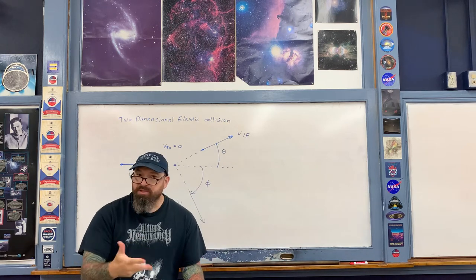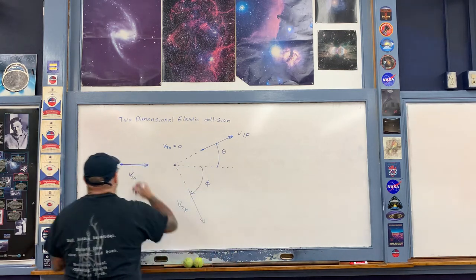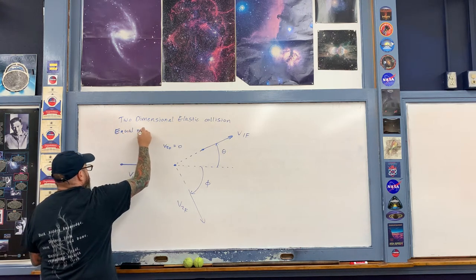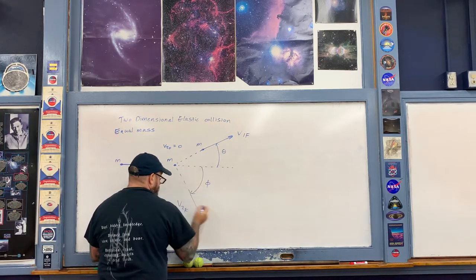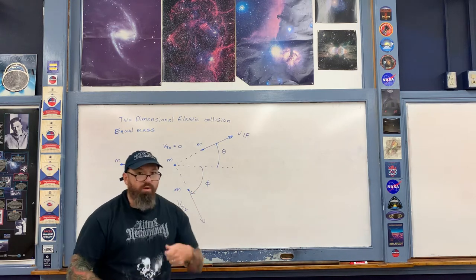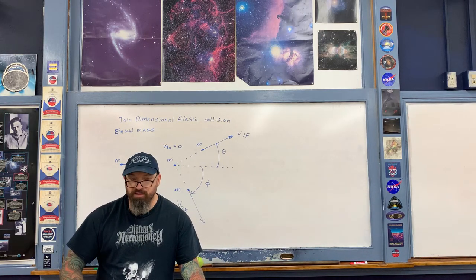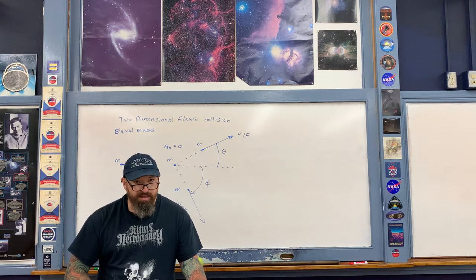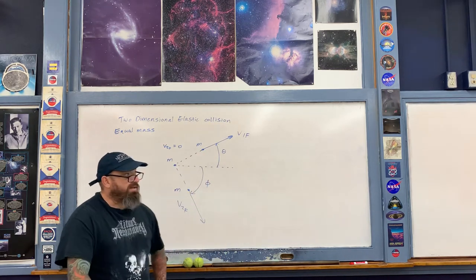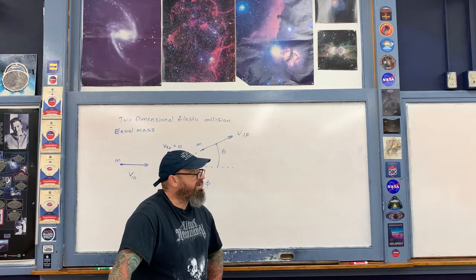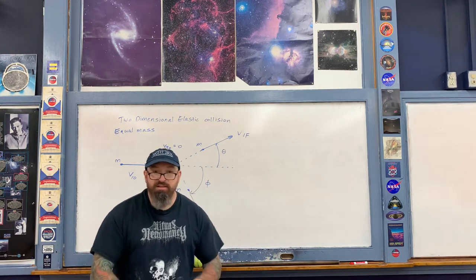For purposes of this lecture, we'll examine what happens if the objects are of equal mass. If they're of equal mass, both the incident particle and the target have mass m. There is one elegant result in this case. The problem to prove is: that the sum of the scattering angles is 90 degrees — in other words, theta plus phi equals 90 degrees — for two objects of equal mass undergoing a two-dimensional elastic collision when one object is initially at rest.